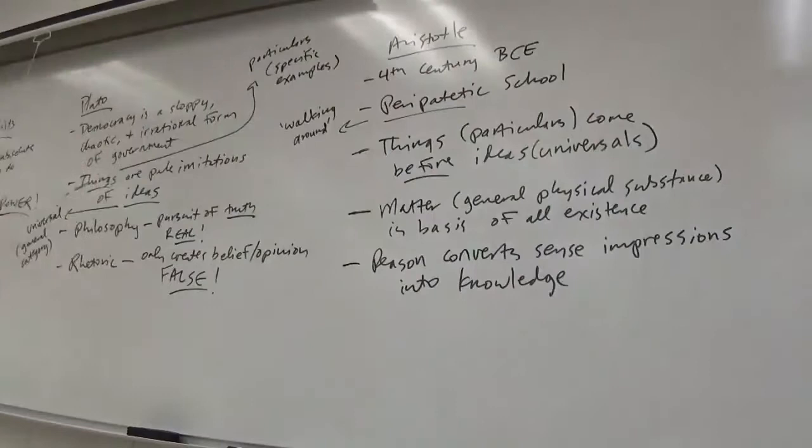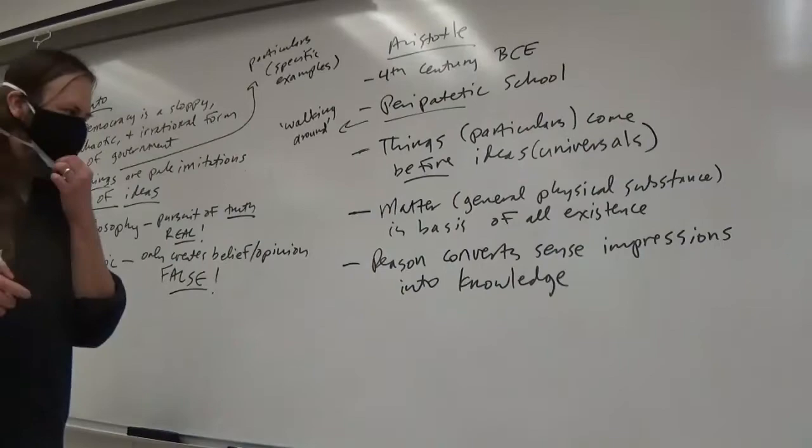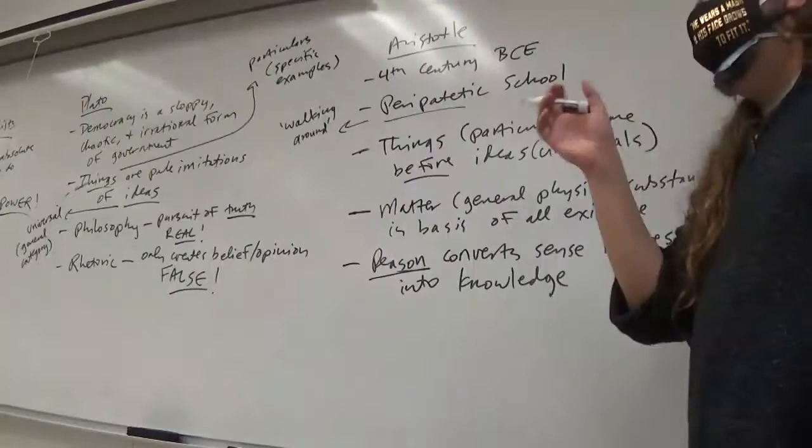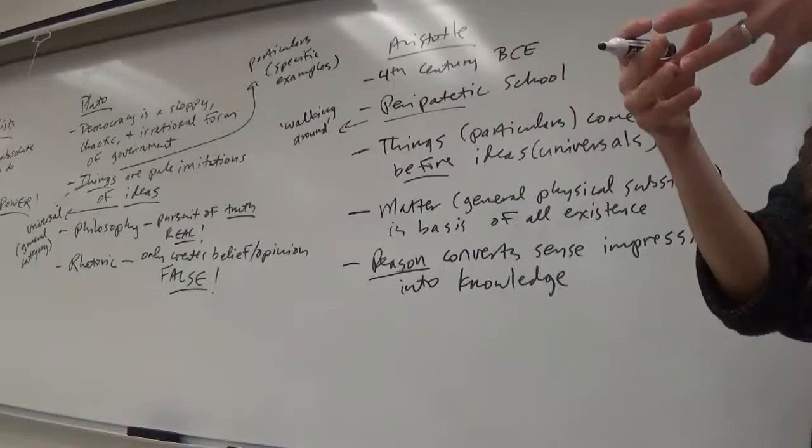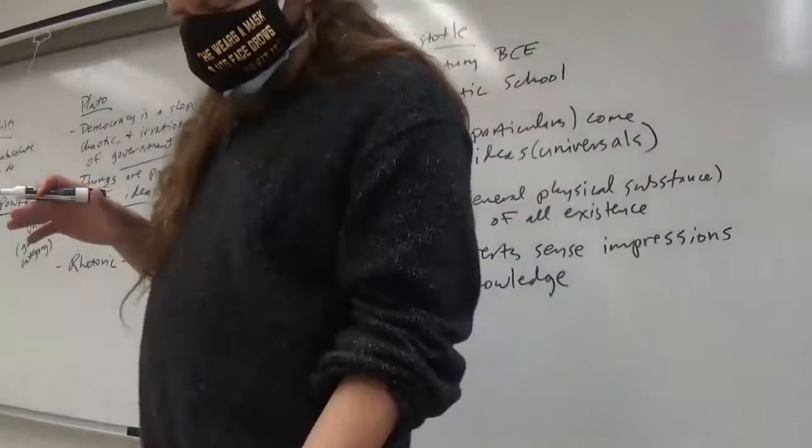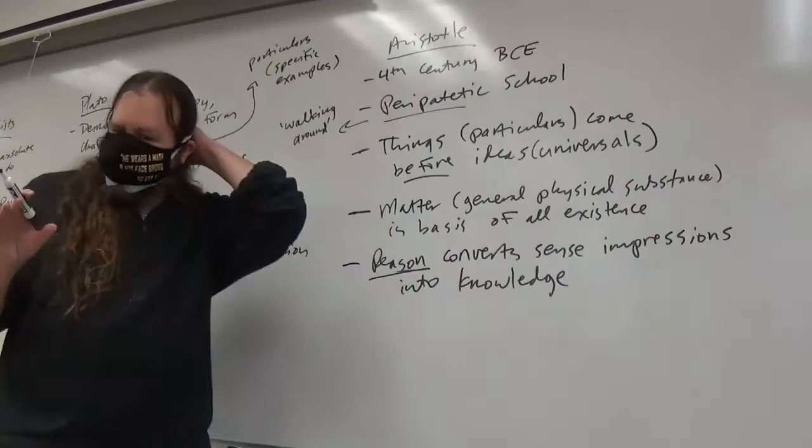Aristotle believes that we actually do form knowledge through our experience with things. And this knowledge can thus be either true or false. Plato did not concede the possibility of there being false knowledge. For Plato, knowledge is always that which is true. You can only know things that are true. For Aristotle, on the other hand, knowledge is sometimes false because our sense impressions are sometimes false. But we do have this particular faculty of reason that allows us to take particulars, lump them together into universal categories. So these are basic notions that are sort of like Aristotle's core assumptions here.